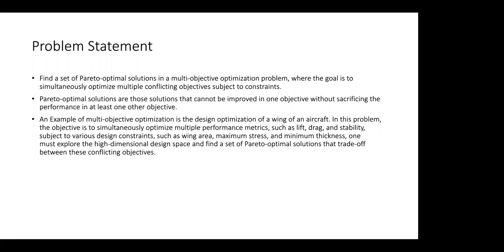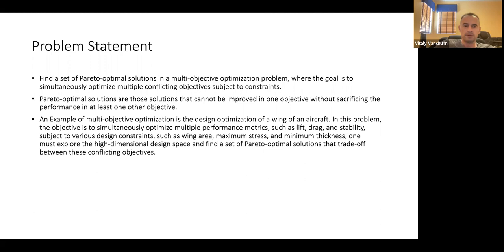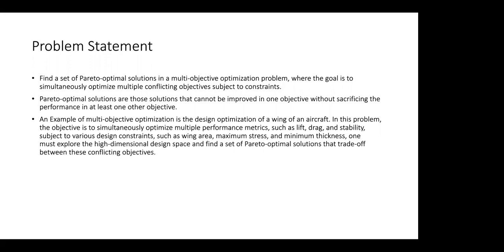Say we have 10 different objectives to optimize. A solution x is Pareto-optimal if it is equal to or greater than all those 10 objectives. Say we find 100 different answers — the 99th answer is Pareto-optimal if it is better than or equal to all the rest, meaning it is not worse than any of them.